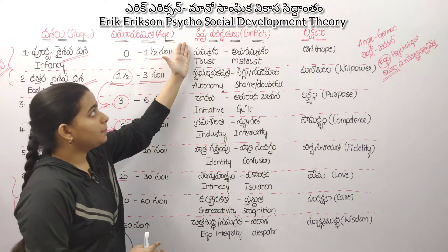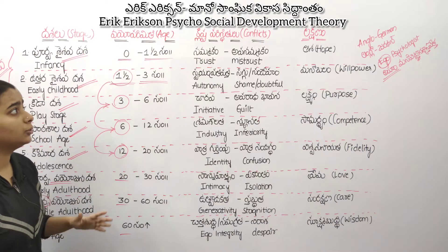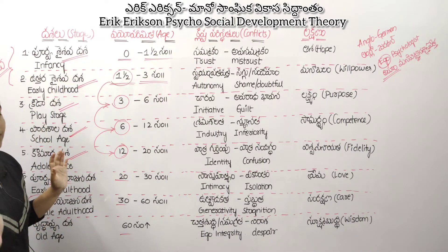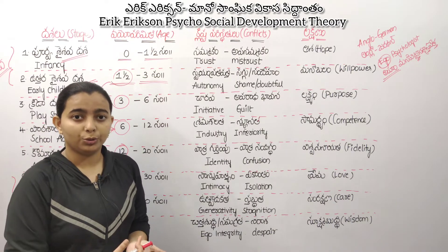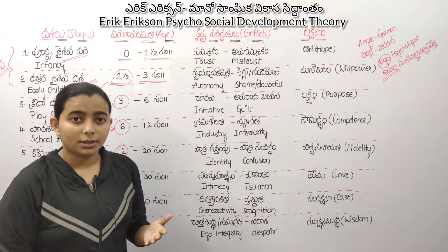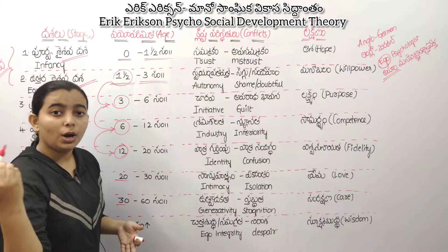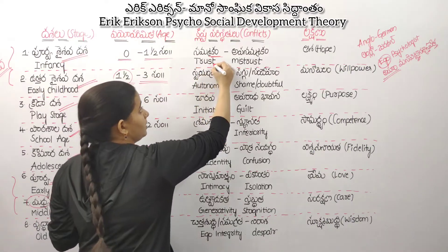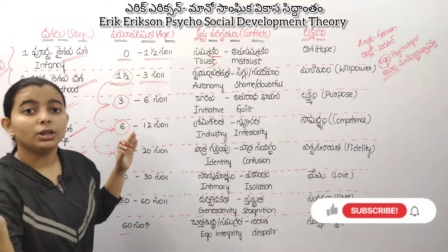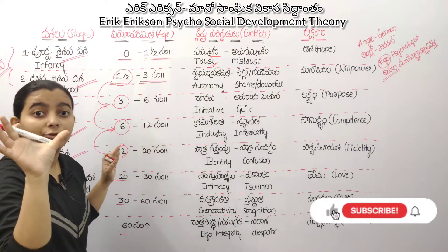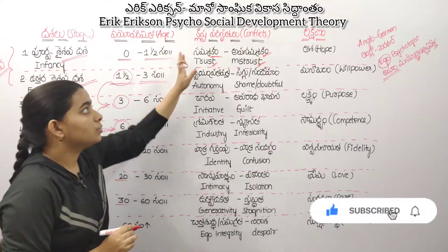The first stage involves Trust vs. Mistrust. There are a lot of small names. The aim is trust — I am not sure if they are small. Trust is what they say — if we ask everyone, it is a mistrust.